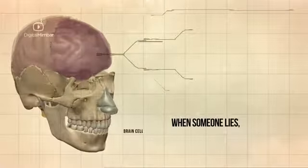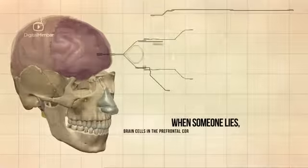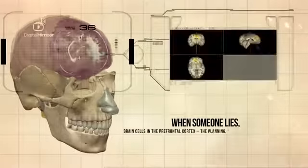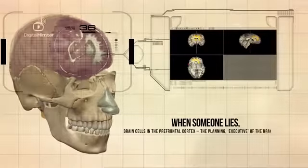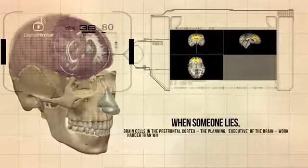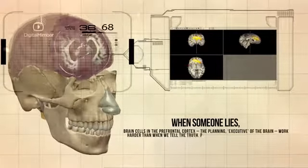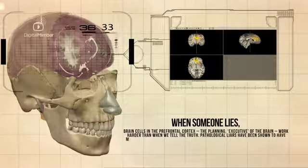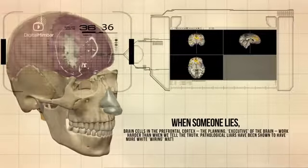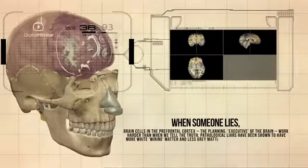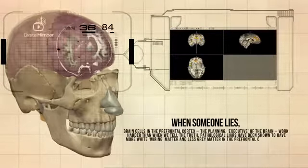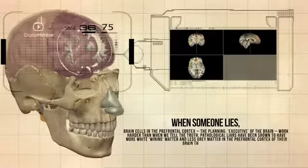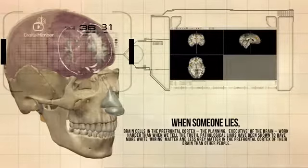When someone lies, brain cells in the prefrontal cortex — the planning executive of the brain — work harder than when we tell the truth. Pathological liars have been shown to have more white matter wiring and less grey matter in the prefrontal cortex of the brain than other people.